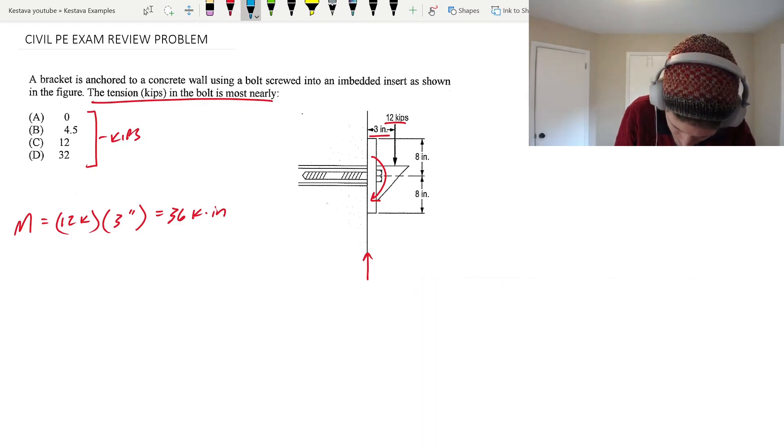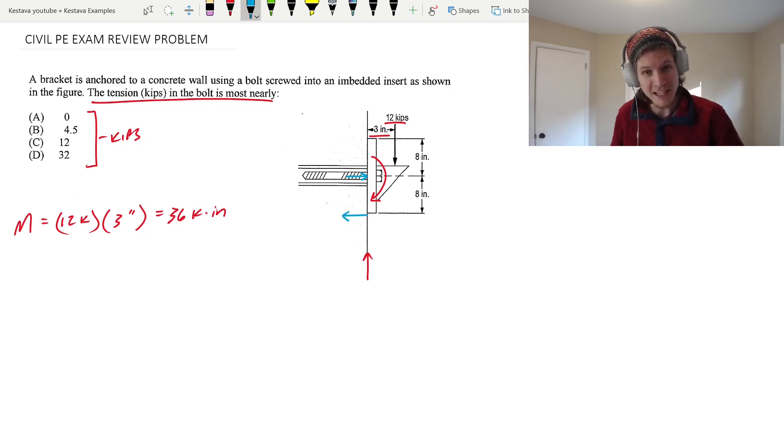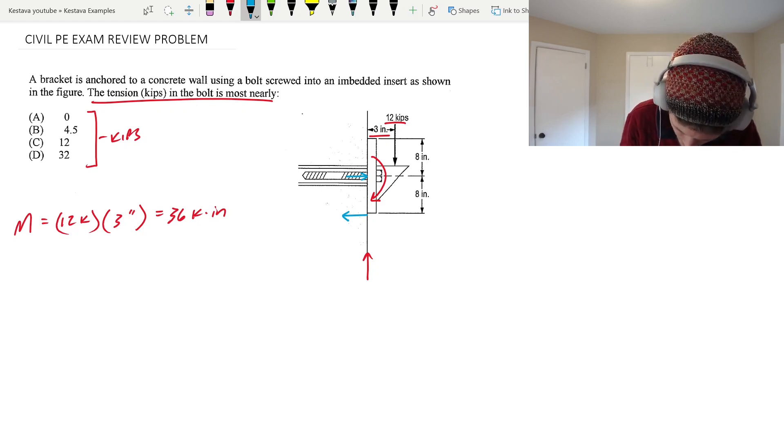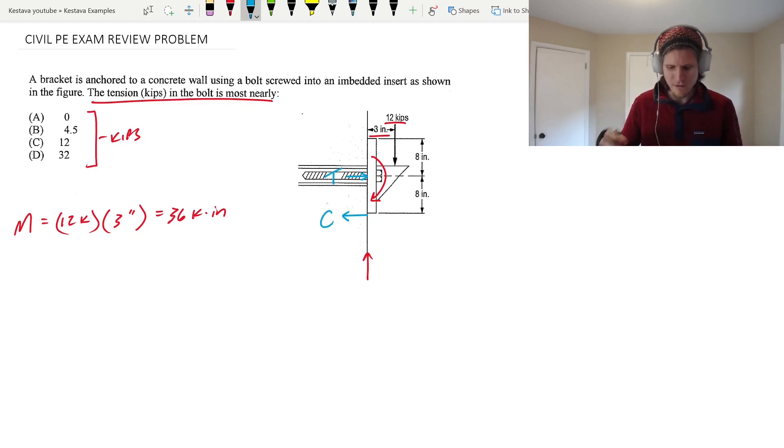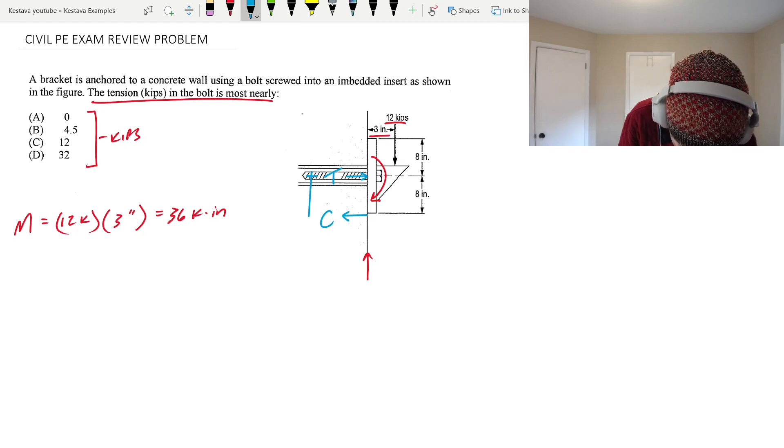I'm going to go blue here. Our couple is going to be the bolt and then the edge of our plate. Because what's happening now to resolve that moment, you are creating now a tensile force and a compressive force. And the way that you find those compressive and tensile forces is you divide your moment by the length of your couple. So the distance between the tension and compression, which is going to be that dimension there, which, look at that. We're going to switch back to red. It's given to you 8 inches.